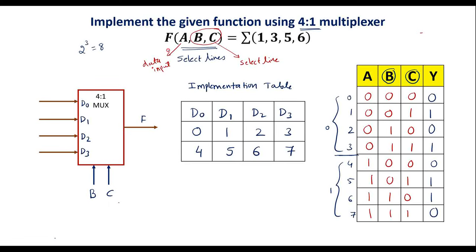So we write a-bar in the first row (minterms 0–3, where a = 0) and a in the second row (minterms 4–7, where a = 1). Now, for the minterms in the function — 1, 3, 5, 6 — we place a circle. This implementation table tells us that for minterm 1 and 5 the circles appear, for minterm 3 and 6 circles appear, and for 0, 2, 4, 7 there are no circles.